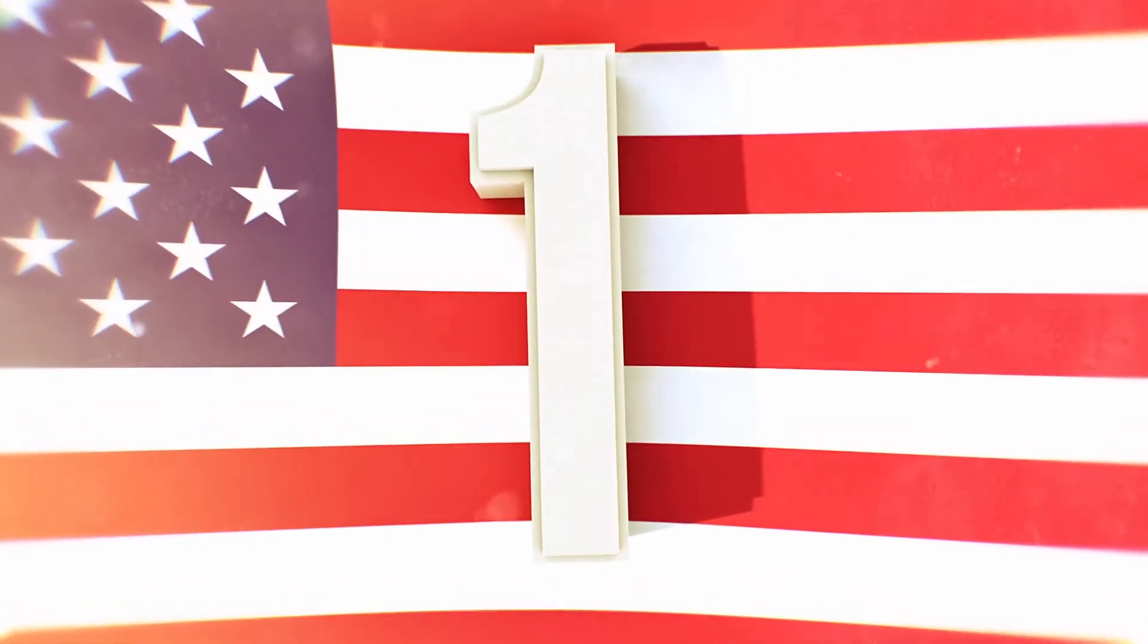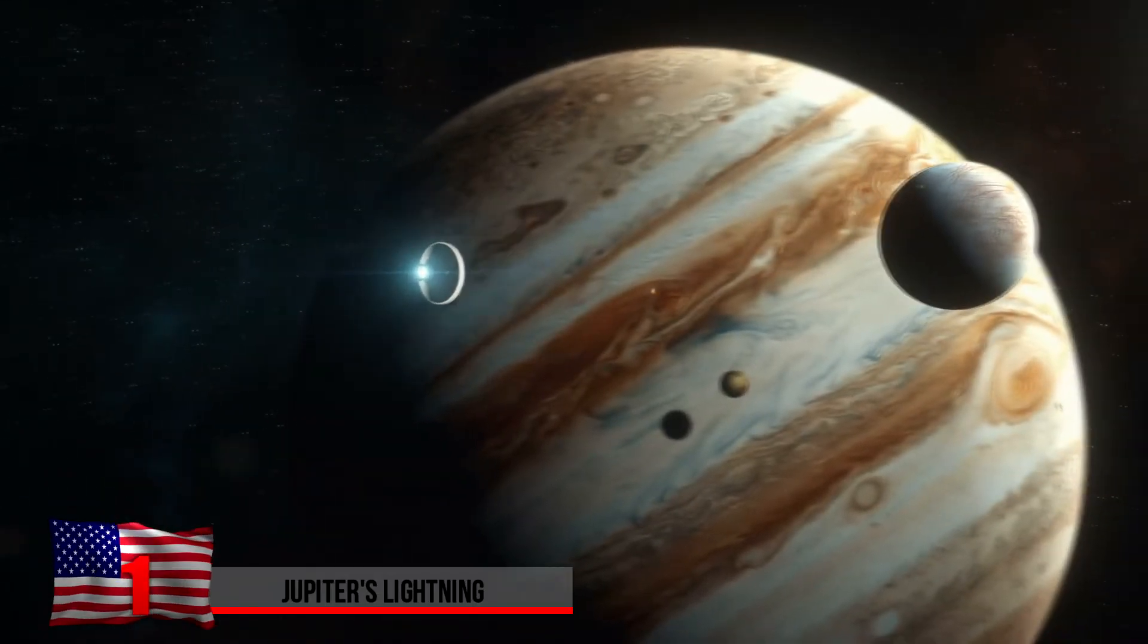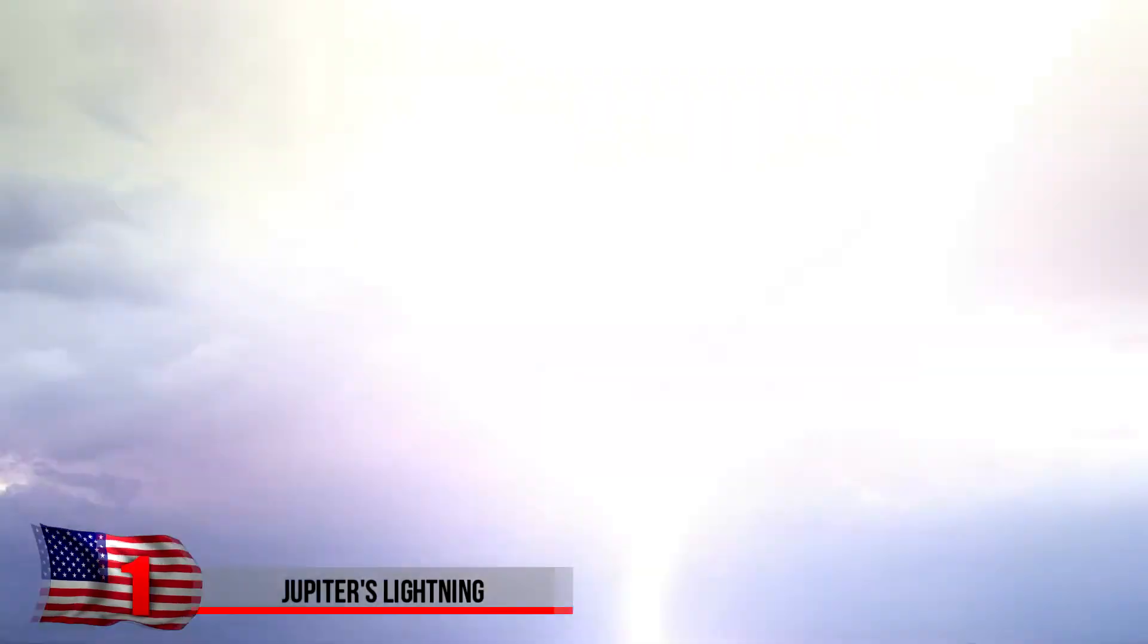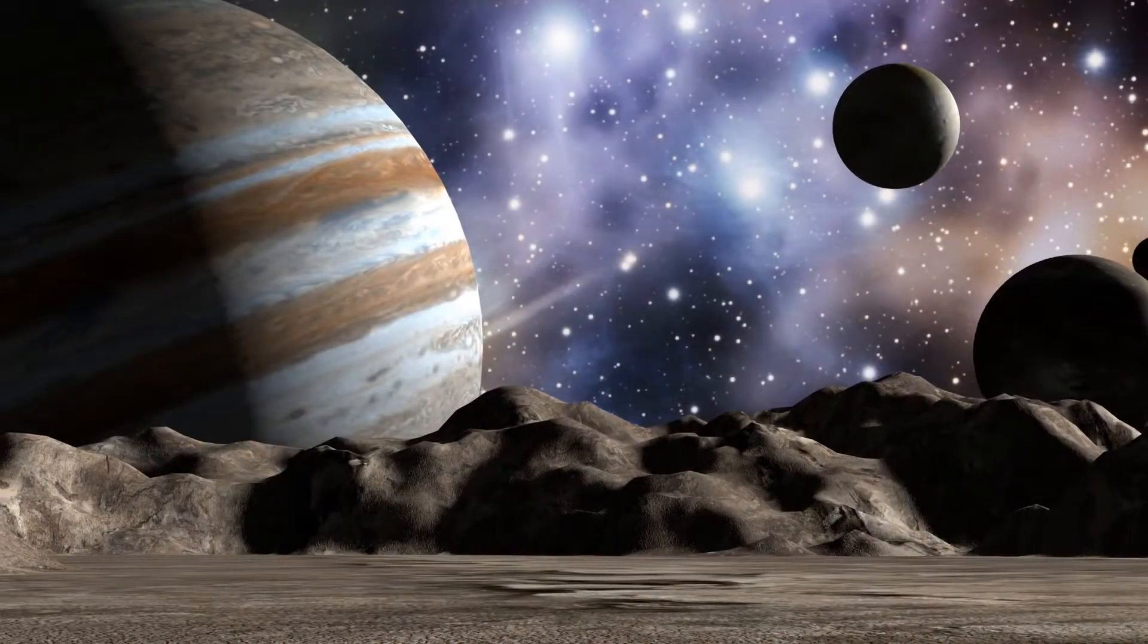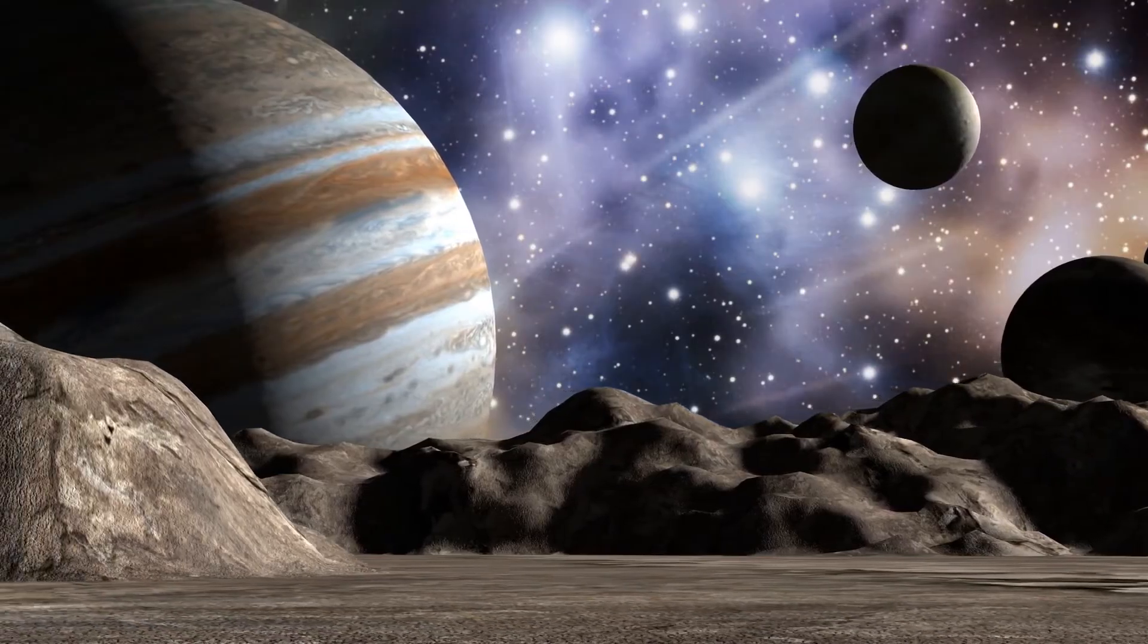Jupiter's Lightning. Considering Jupiter's namesake famously wields a thunderbolt, NASA probably should have expected that the planet's enormous storms come with lightning, just like they do here on Earth. Space names have an unusual tendency to be prophetic, after all.